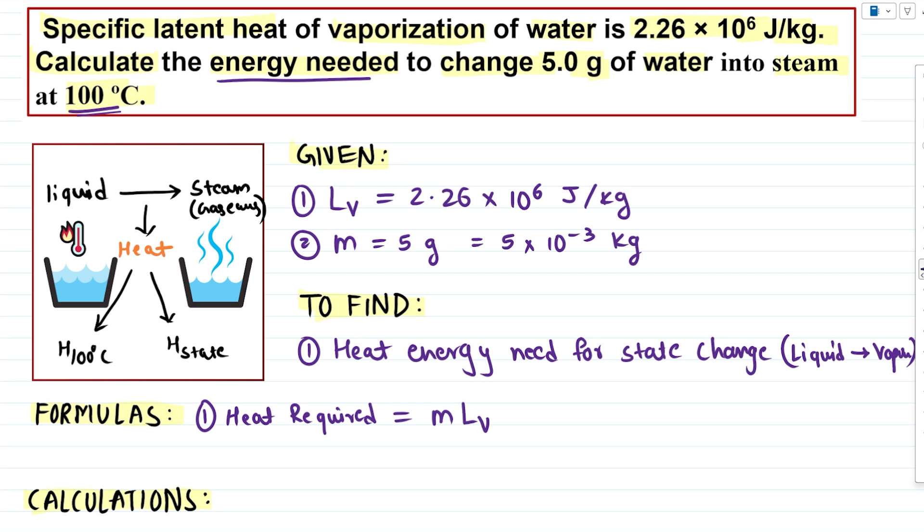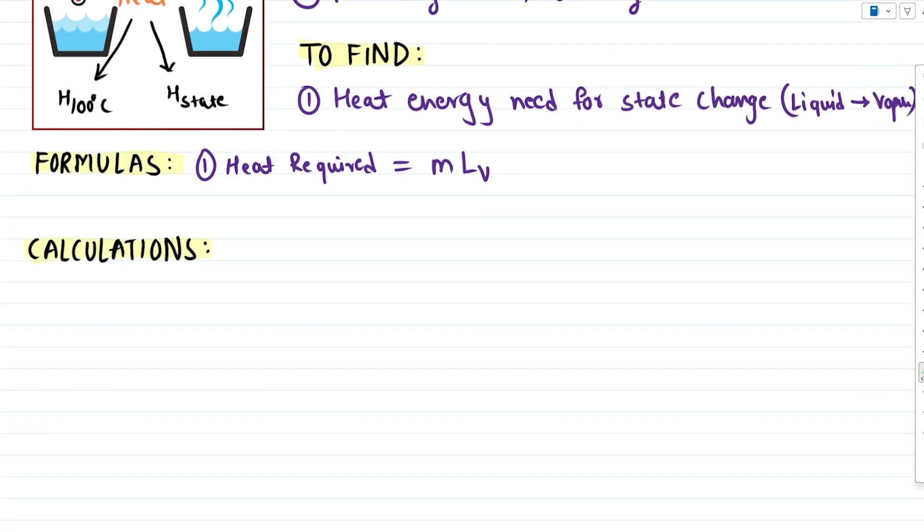So if I want to know heat in this case, I want to multiply the mass of water and latent heat of vaporization. And it's so good that we already know both the values. We know the mass and we know the latent heat of vaporization. So simple substitution will fetch us the value for the heat required, which is our final answer.